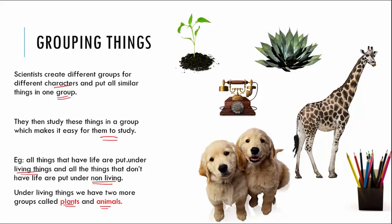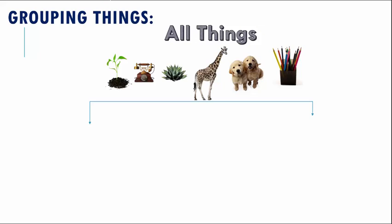Now let us try and group things. We have all of these six different things here. We have a green plant, we have a telephone, we have another plant, we have a giraffe, we have two cute little puppies, and we have a pencil stand. So all of these we have to group them. The first two groups we saw are living and non-living things, and under living things there are plants and animals.